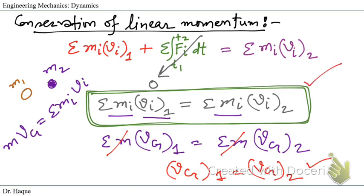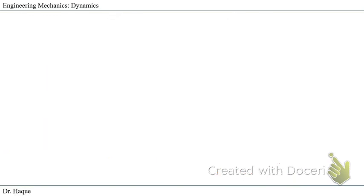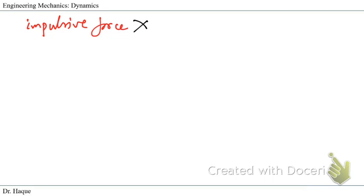To apply conservation of linear momentum, we must first study the free body diagram to check whether any impulsive force is acting. If there is no impulsive force, we can apply the conservation equation. There is also a way to neglect impulsive forces if they are too small compared to the dominant forces in the system.